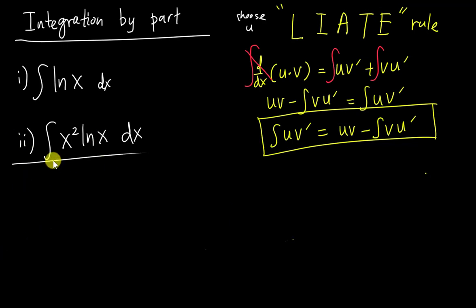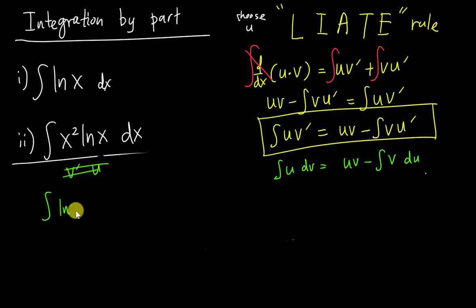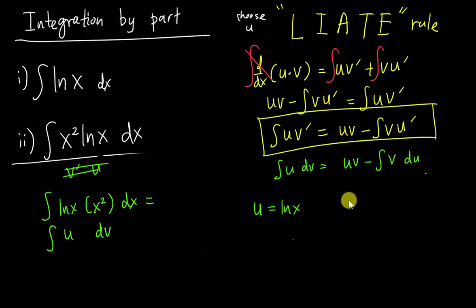For the second question — integrating x²·ln(x) — following the LIATE rule, ln(x) will be our u and x² will be our dv. You can think of the formula as: integral of u·dv = uv minus integral of v·du. So u = ln(x) and dv = x²·dx.